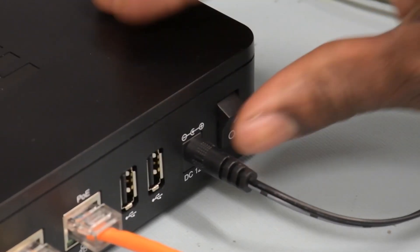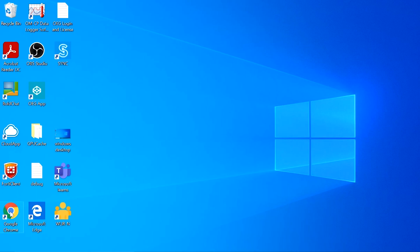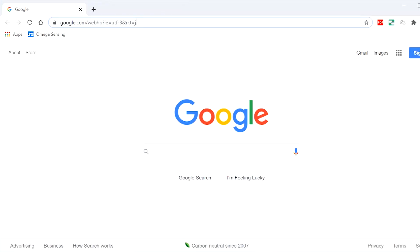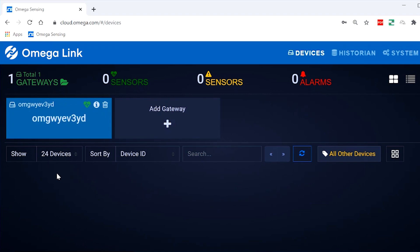First, make sure the gateway is powered on and connected to the internet. And our PC is up and running and we've logged into our Omega cloud account. Just open a web browser and navigate to cloud.omega.com. Since we already have an account and we're using a registered gateway, we'll just sign in and here's our gateway ready to go.